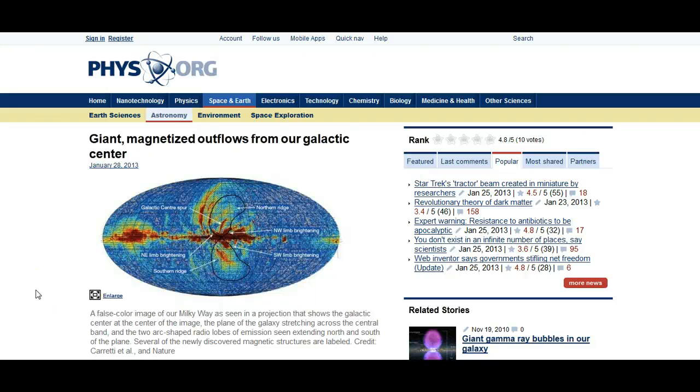It definitely seems like Flat Earth Science is catching up, and this article is very interesting because it is showing us that we have these giant magnetized outflows coming from our galactic center. This article appears on SciOrg and was published on the 28th of January 2013.